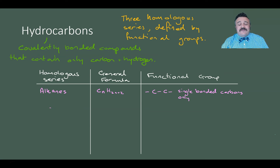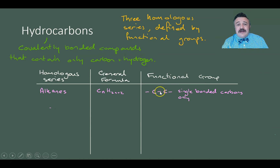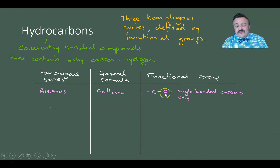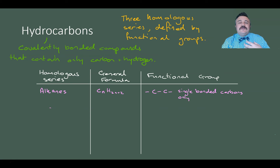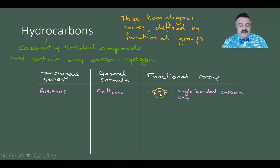Our first series is alkanes. Alkanes have a general formula of CₙH₂ₙ₊₂. What that means is for every carbon there are two hydrogens, plus an extra two hydrogens on top. The reason is that a neutral carbon should have four covalent bonds coming off it. Imagine two carbons — whenever we talk about organic compounds, if we don't include an extra element attached to a carbon, we assume the remaining available bonds are filled with hydrogens.